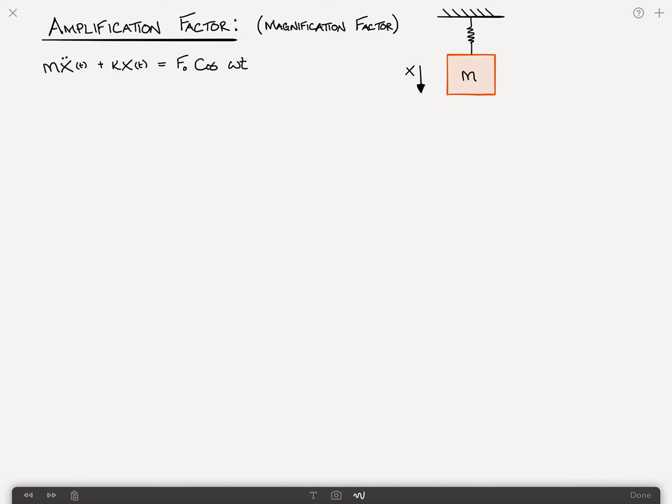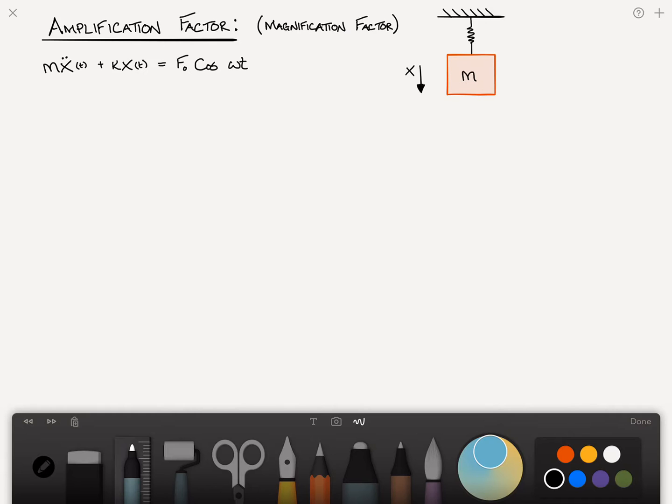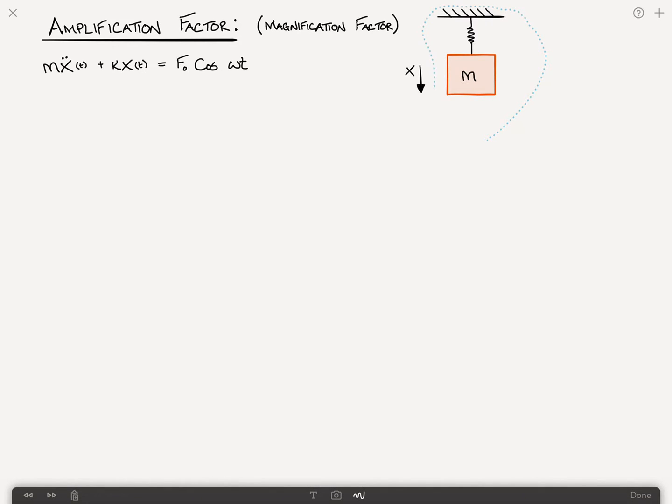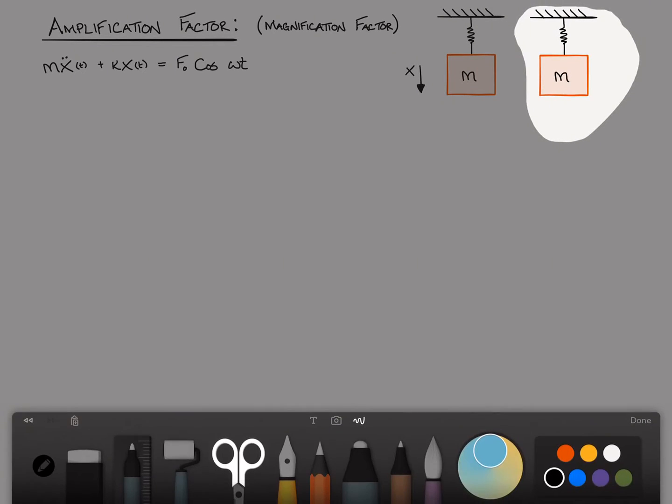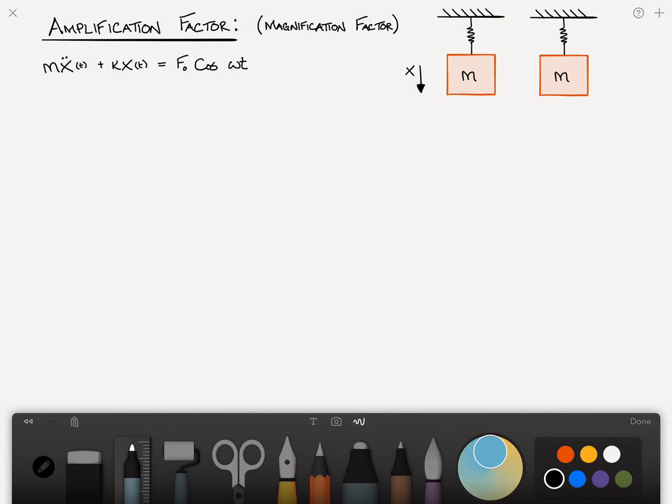So let me duplicate this mass spring system and give a bit of clarity what we're talking about. So if we take this and put a force f zero on it, this will now deflect.